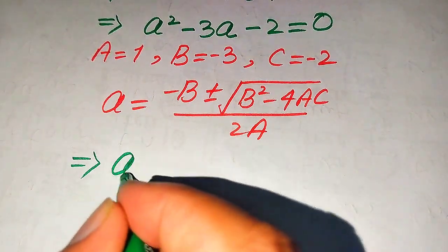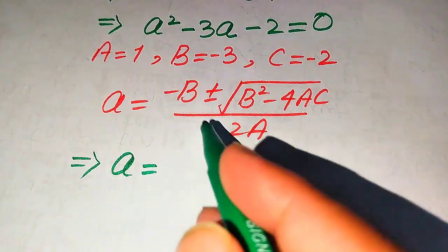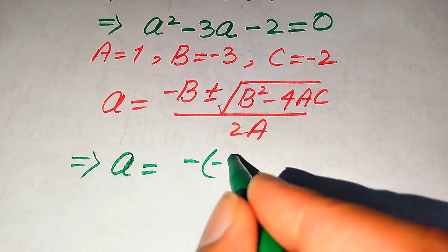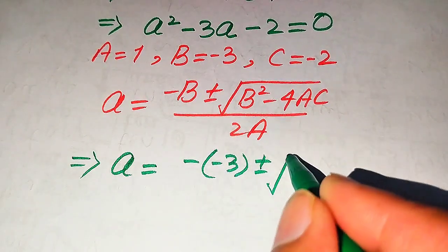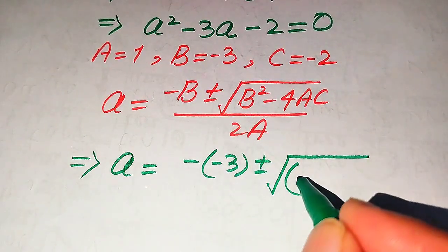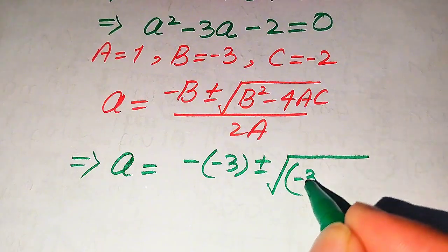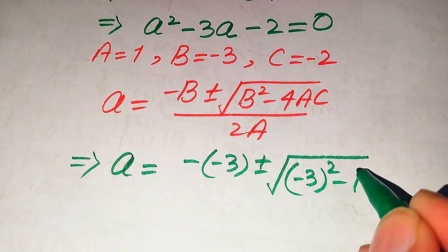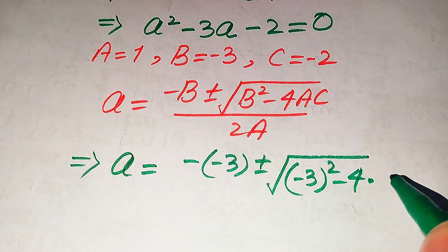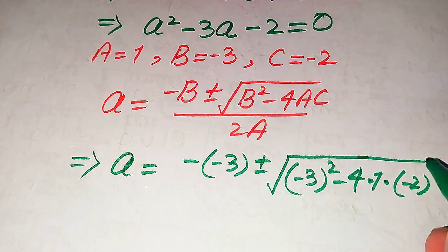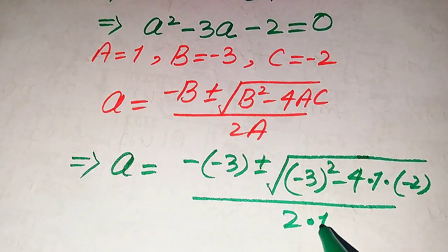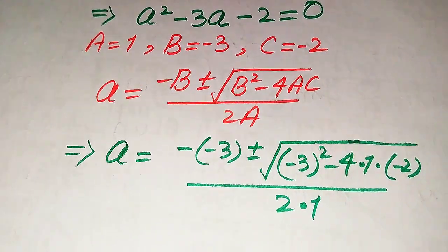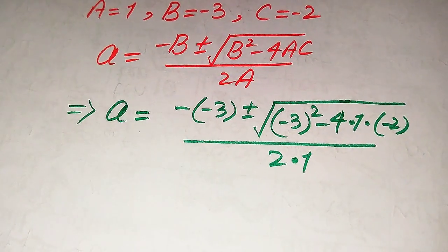Now we substitute the values of a, b, and c into the formula. We get: a equals negative (minus 3) plus or minus square root of (minus 3) squared minus 4 times 1 times (minus 2), all divided by 2 times 1.